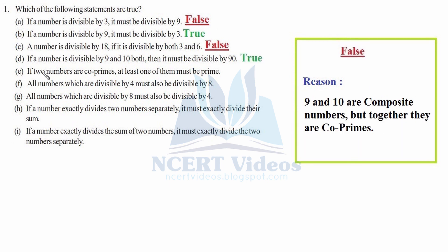Statement E: if two numbers are co-primes, at least one of them must be a prime. This is false. Nine and ten are both composite numbers but together they are co-primes, so E is false.